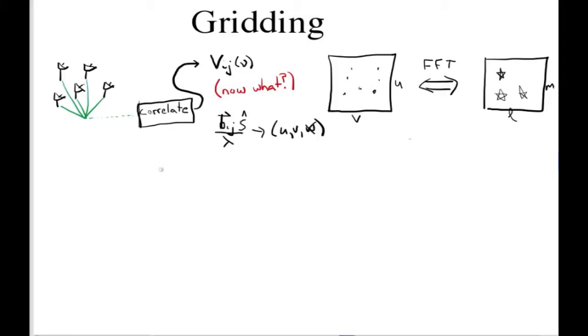So we want to get rid of W. Basically what we've got to do is take our visibility, project out the W term, take that projected number, and stick it somewhere in this UV plane. Now dealing with the W term is not quite as simple as that, but we'll discuss that in a lecture on W projection.